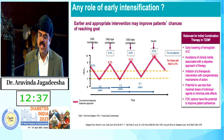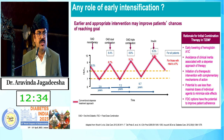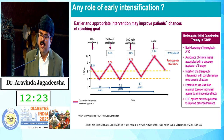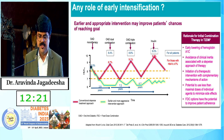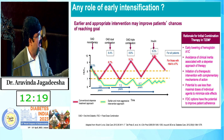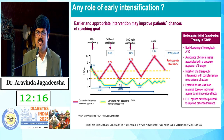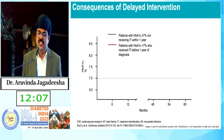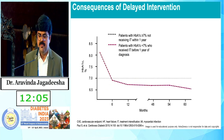With early aggressive therapy there will be early lowering of HbA1c, avoidance of clinical inertia associated with the stepwise approach, initiation of therapeutic interventions with complementary mechanisms, potential to use less than maximal doses to minimize side effects, and FDC options to improve patient adherence. You can maintain HbA1c around 7 or less than 7.